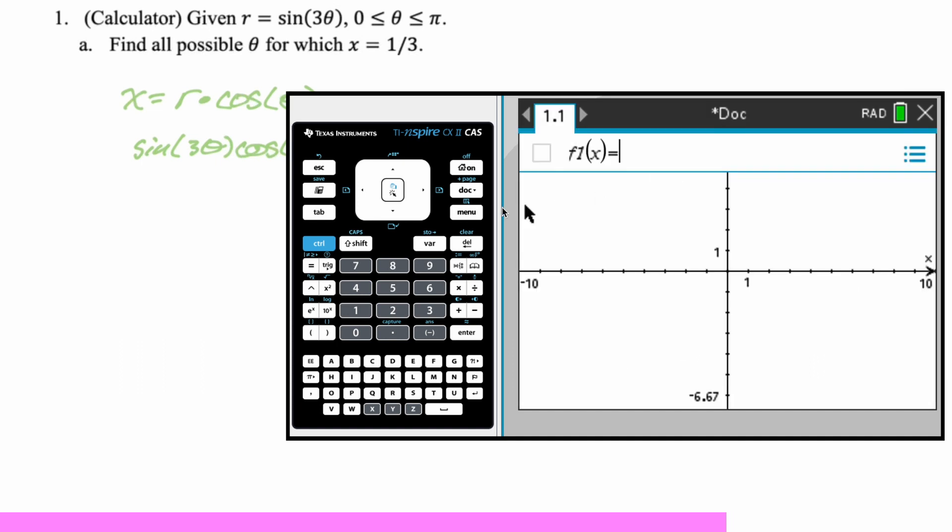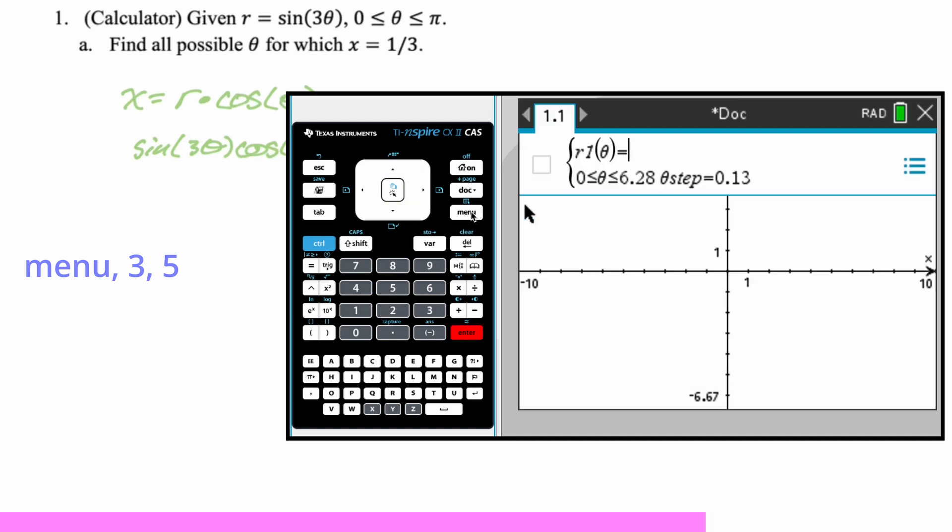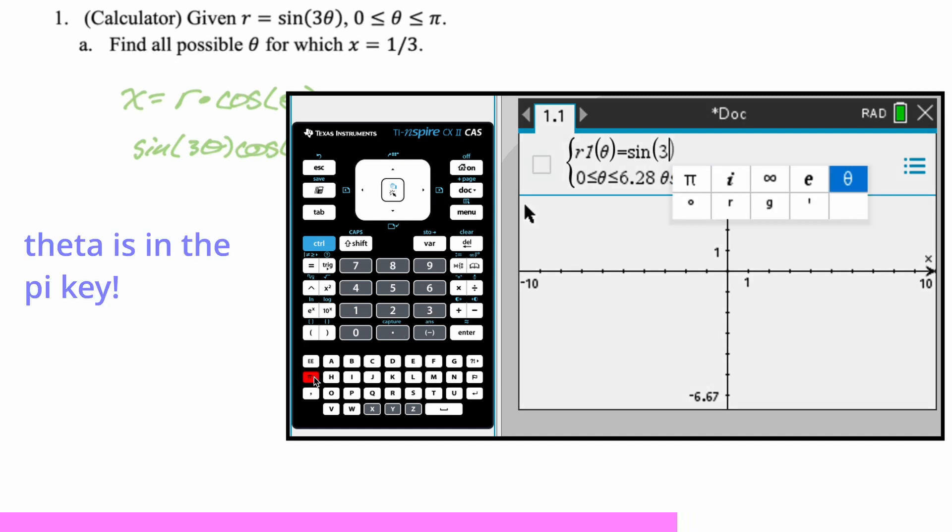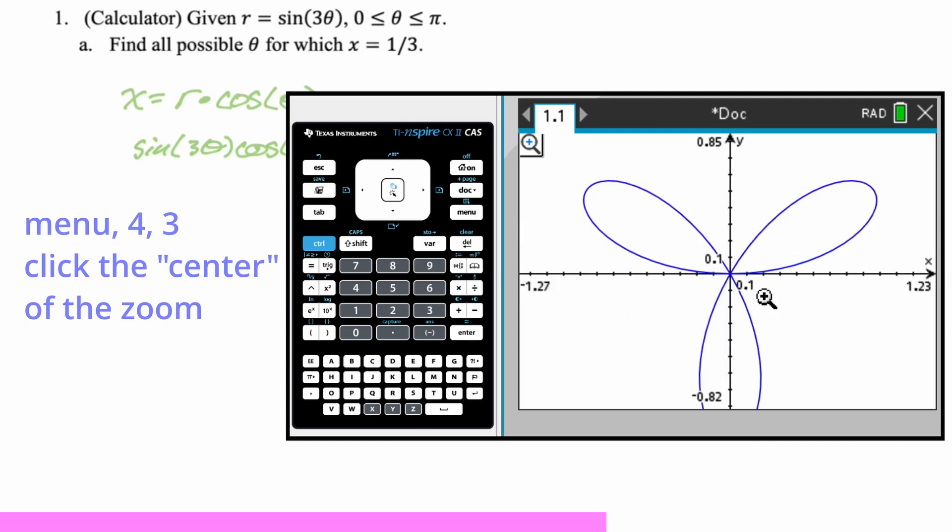r in this case is sine of 3 theta. And at this point you realize we're going to need a calculator. So we need sine of 3 theta cosine theta equal 1 third. I'm going to switch over to the calculator, show you how I would solve this, come back and write down my answers. Okay, so for this part what we want to do is we're finding all the theta for which x equals 1 third. So we're mixing polar and rectangular. One of the keys to being successful with polar is to realize that most of the time you're not going to deal with polar mode on your calculator. You're actually going to do everything basically in function mode. So I am going to go in and graph this thing. So I'm going to say graphs, press menu, option 3, and then option 5 for polar.